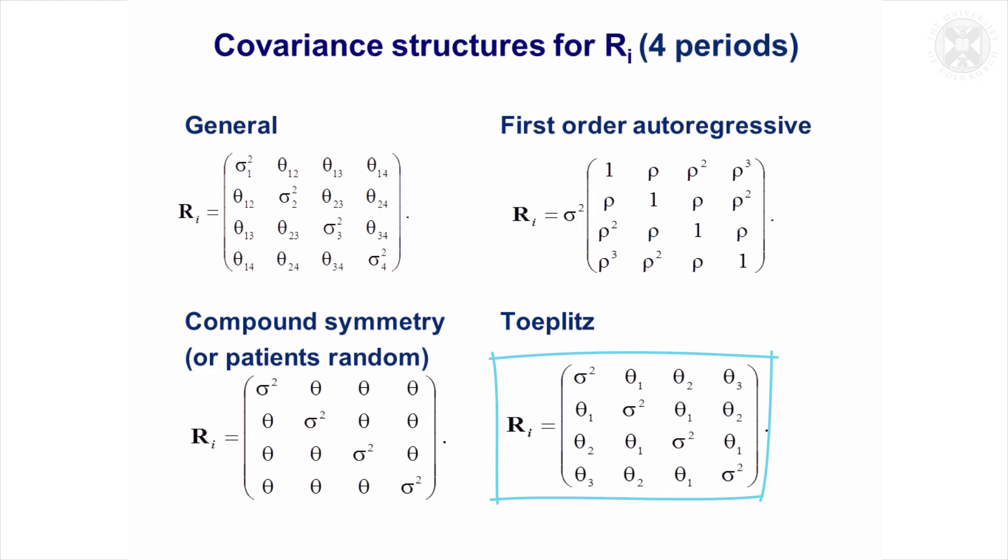That's visits one and three and two and four, and then theta three is the covariance assumed for visits that are separated by three, so that would be visits one and four. So that's the Toeplitz structure.